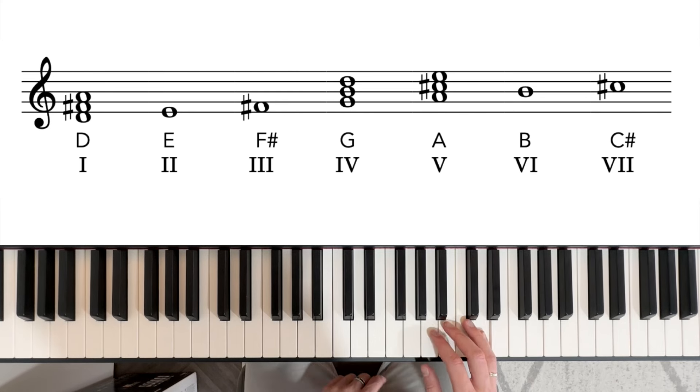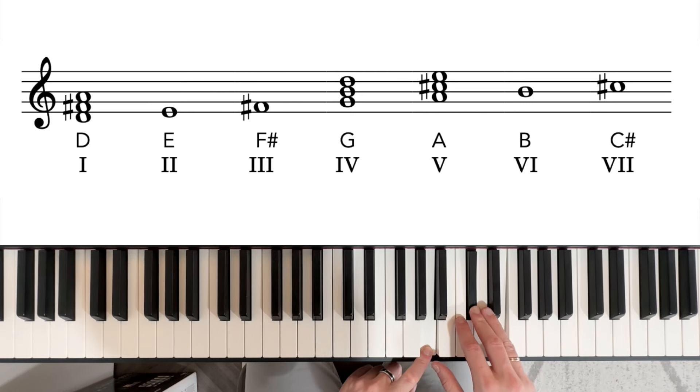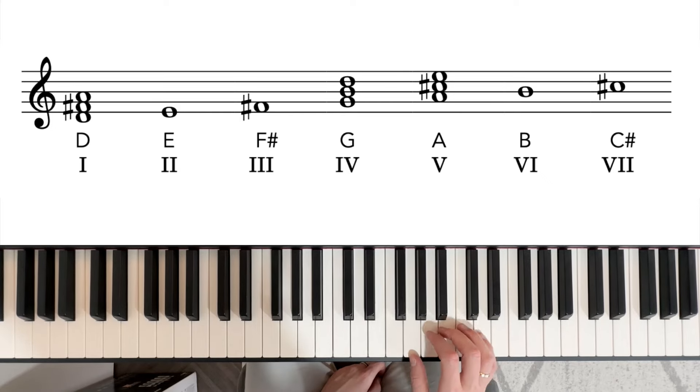And chord five is going to start on A, the fifth note. One, two, three, four, five. So the first, third and the fifth: A, C sharp, E. This is our fifth chord, the dominant chord. Chord one, chord four, and chord five.